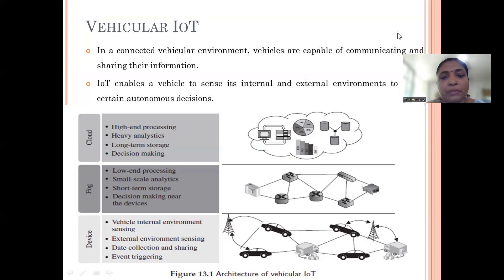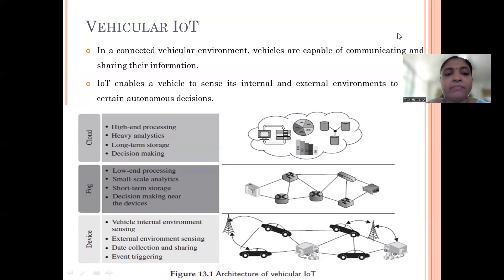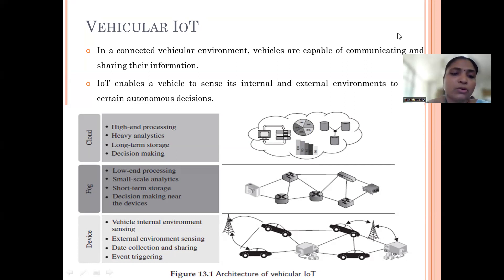Looking at the architecture of Vehicular IoT, at the lower end we have devices sensing the environment both internally — within the vehicle — and externally, outside the vehicle. After data is sensed, collected, and shared, event triggering occurs based on the information. For decision making at the next level, data is stored in cloud or fog. For lightweight computing we use fog, and for heavy processing we use cloud computing. For short-term storage and small-scale analytics we use fog computing, and for heavy analytics we use cloud computing.